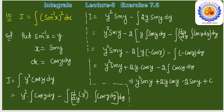Substitution के बाद integral reduce हो गया: ∫y²·cos y dy। y² को first function, cos y को second function लेंगे। y²·∫cos y dy − ∫[2y·∫cos y dy]dy = y²·sin y − 2∫y·sin y dy।